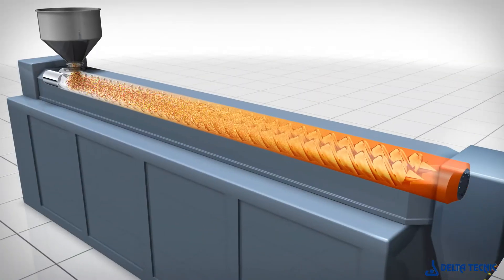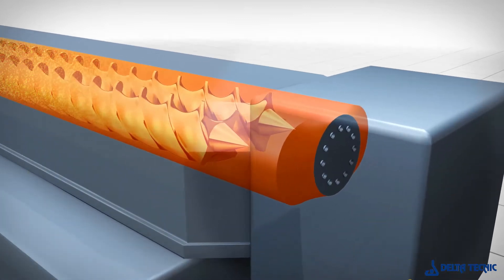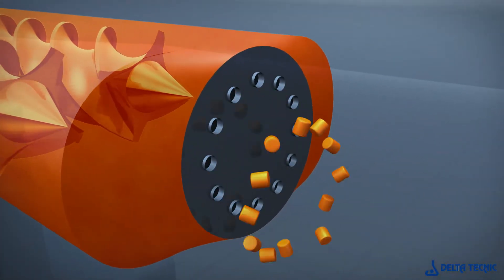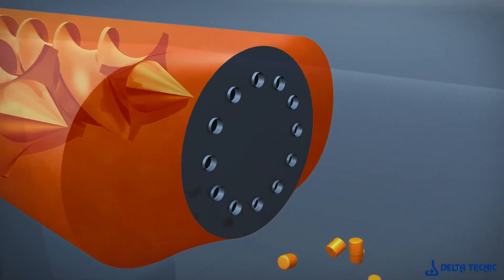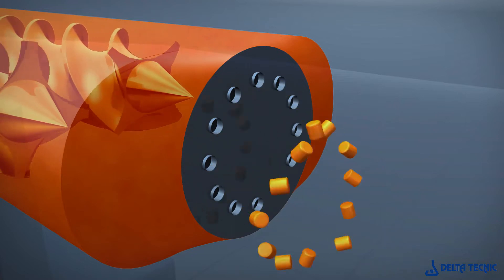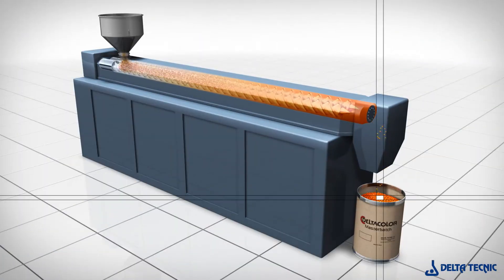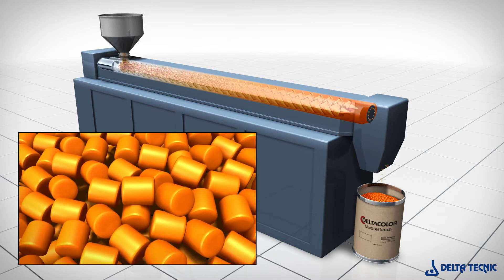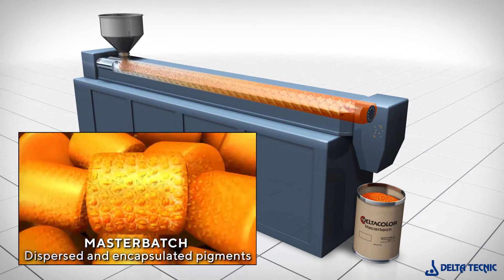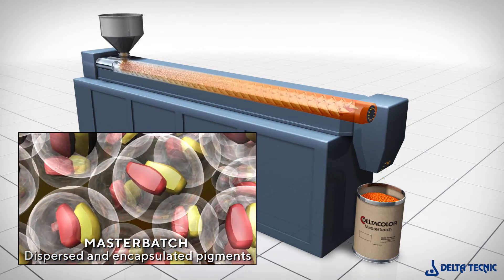Finally, the polymer mass containing the dispersed encapsulating pigment is cut by the extruder cutting system, giving pellets of regular shape and size. The absence of pigment agglomerates and total encapsulation of the dispersed pigments can be seen at the microscopic level in the finished pellet.